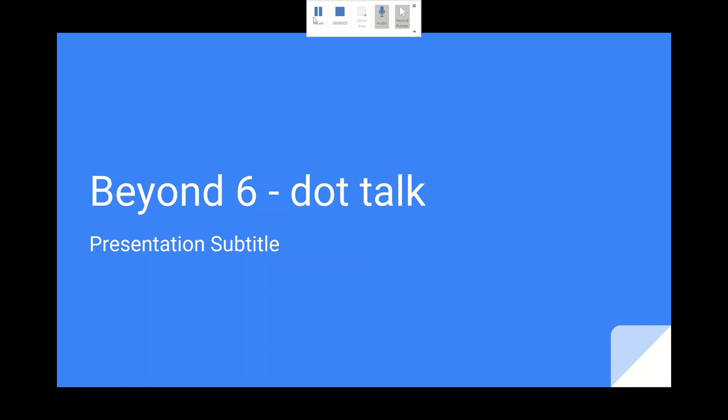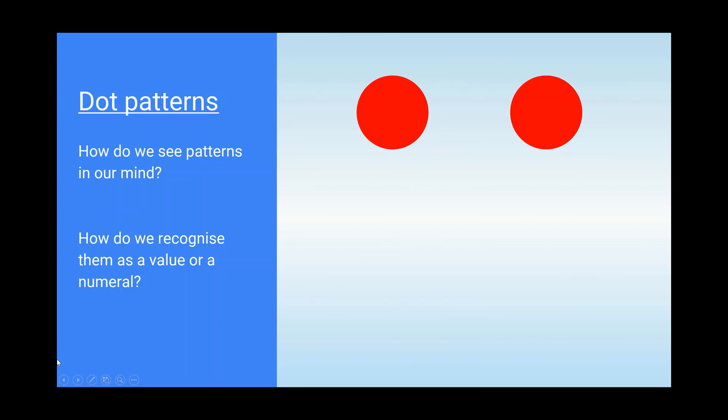Okay, so this is the slideshow that I showed the children. This was after we went through the learning intentions and success criteria for this and the expectation that you need to talk and to share. And then we looked at, just moving forward in the slide, which doesn't want to go when I'm recording the screen. So let's try this way. Okay, so we just showed how do we see patterns in our mind? How do we recognise them as a value or a numeral? And we talked around, you know, this is two, this is quite easy. What do we see here?